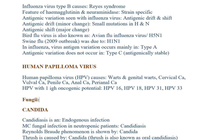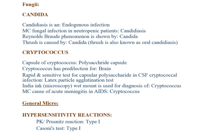HPV causes warts, genital warts, cervical cancer, vulval cancer, penile cancer, anal and perianal cancers. HPV types with high oncogenic potential: 16, 18, 31, 33. Types 6 and 11 cause warts. Candida: candidiasis is an endogenous infection; most common fungal infection with neutropenia. Reynolds' phenomenon shown by Candida. Thrush is caused by Candida.